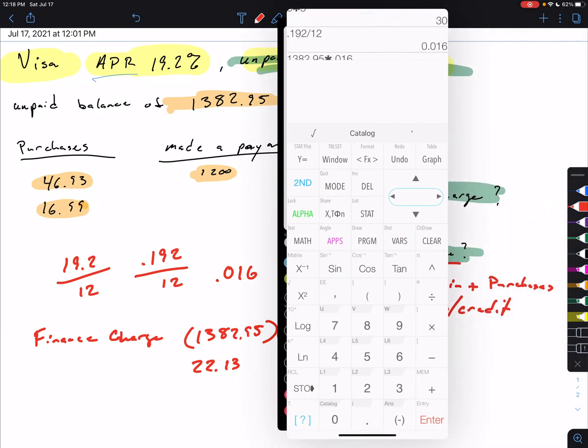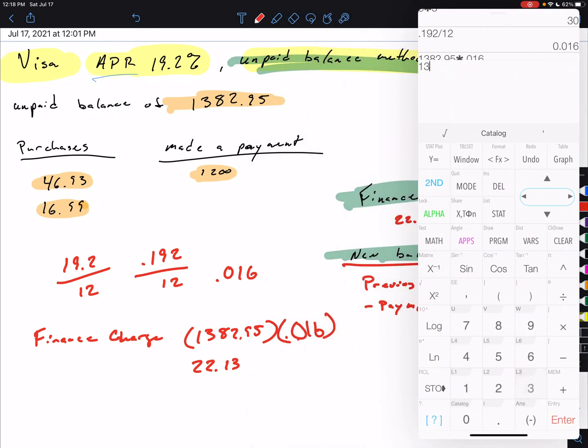So our previous balance was $1,382.95. We're going to add to it the finance charge of $22.13. We'll add to it any purchases of $46.93 and $16.99. So that's what we'd have, $1,469. But we made a payment of $1,200. So we'll subtract away the $1,200 payment, and we're left with $269.